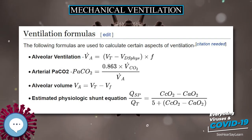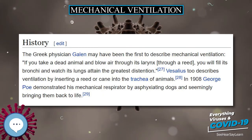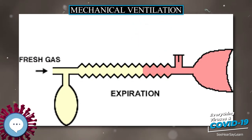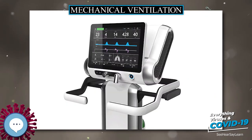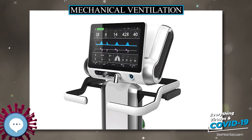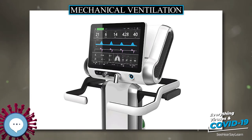Mechanical ventilation is often a life-saving intervention, but carries potential complications including pneumothorax, airway injury, alveolar damage, ventilator-associated pneumonia, and ventilator-associated tracheobronchitis. Other complications include diaphragm atrophy, decreased cardiac output, and oxygen toxicity.